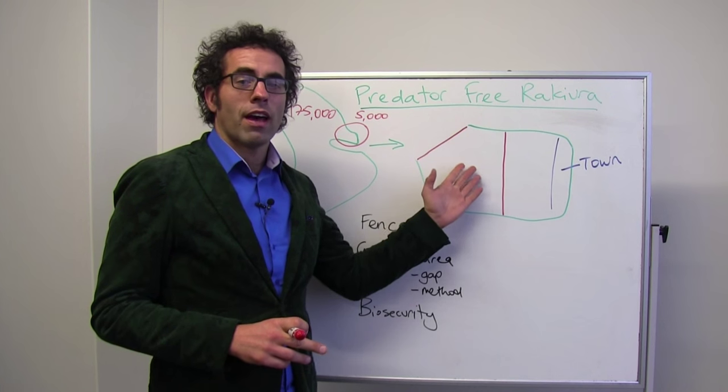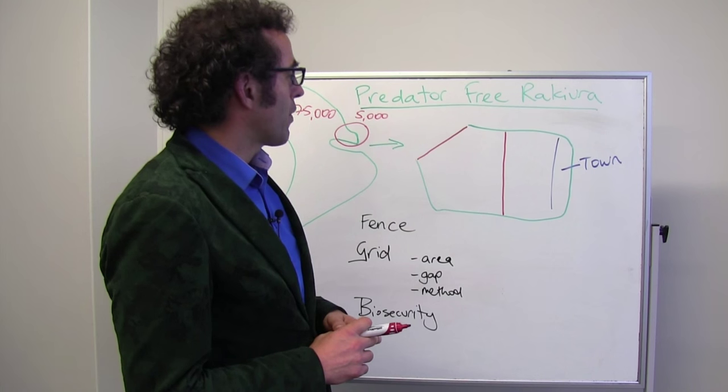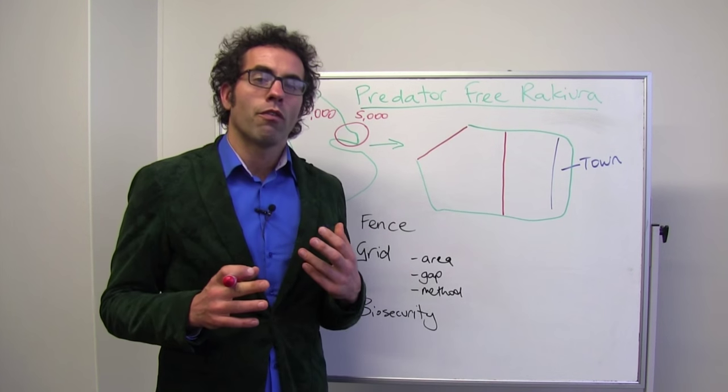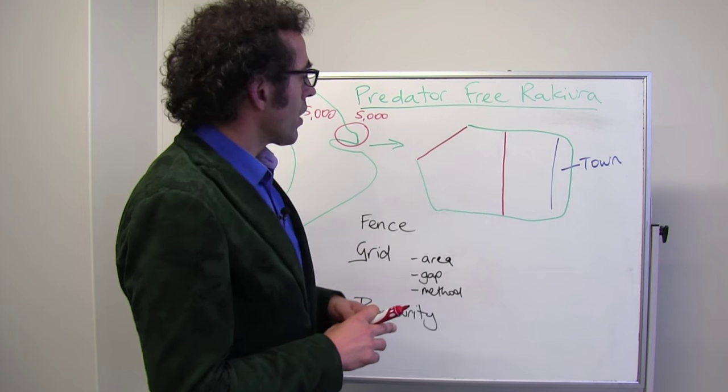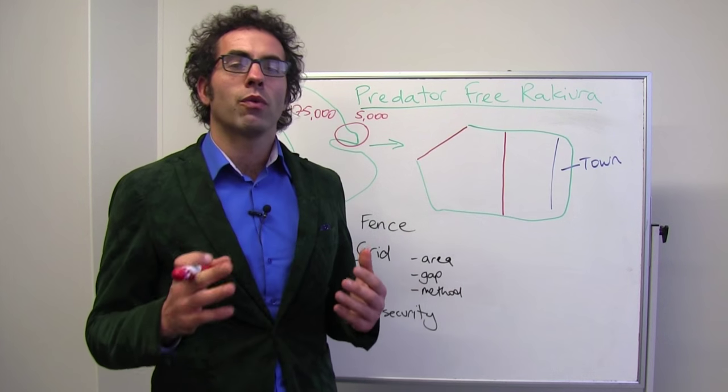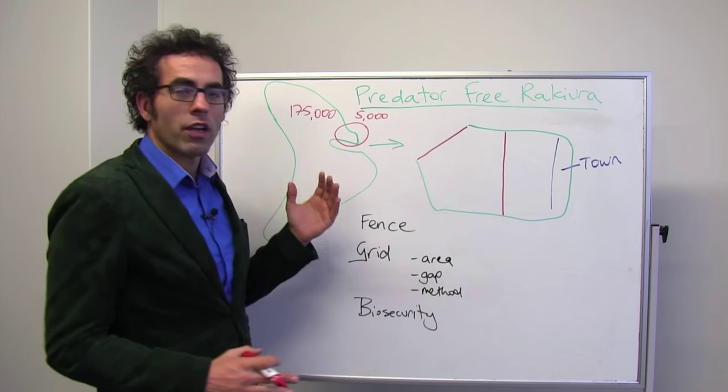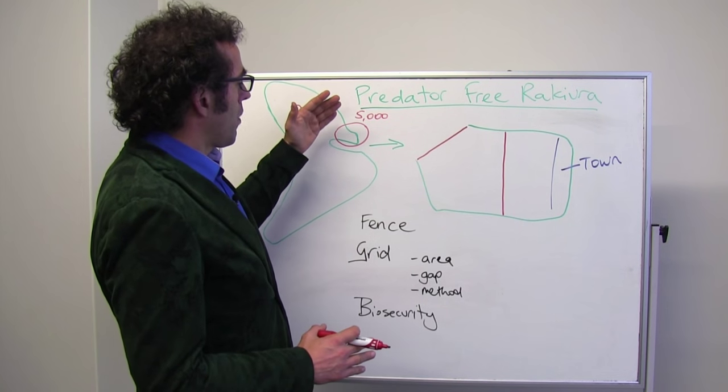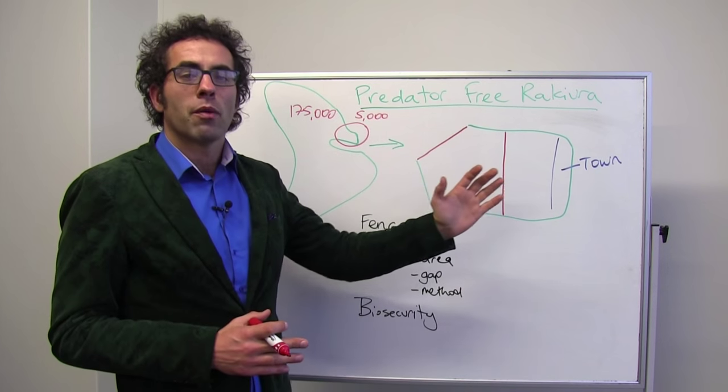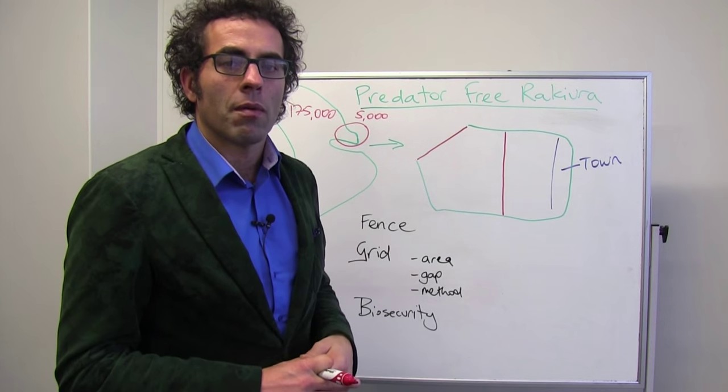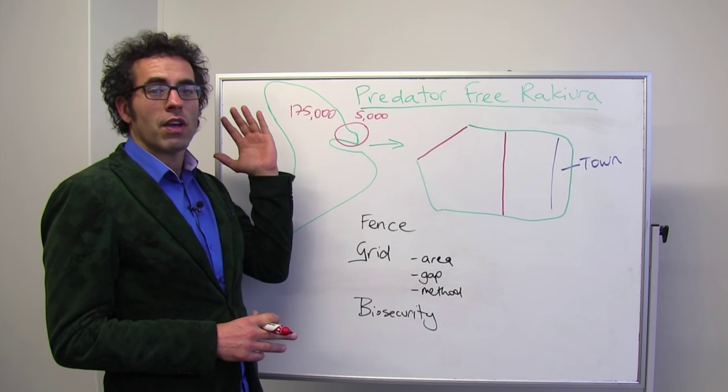So this is my more detailed map, again very poorly drawn, but it gives us an idea of what drives the costs behind this project. The first choice that we've got to make is where do we put the fence. So at the moment, what we're trying to do is break Rakiura into two parts. We're trying to break it into the populated section so that we can eradicate the predators on there in a very manual way that's very low risk. And then we can worry about the rest of the island later.